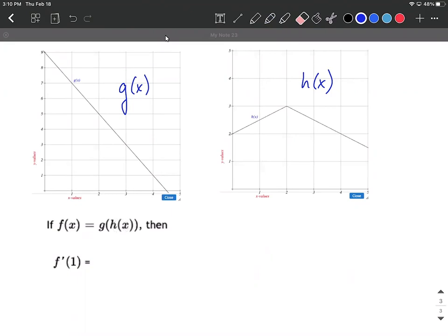So our goal is to find the derivative of f at one. Because we have a function inside of another function, this indicates that we need to use the chain rule. As I go through and write this out, I'm first going to write it out and then we'll gather all the information we need from our graphs.